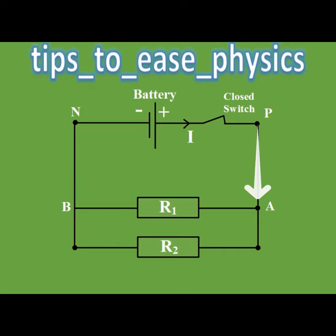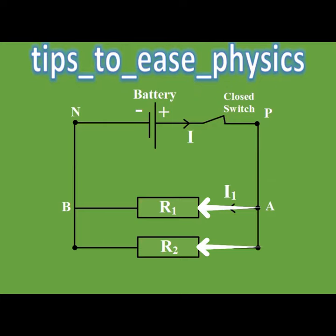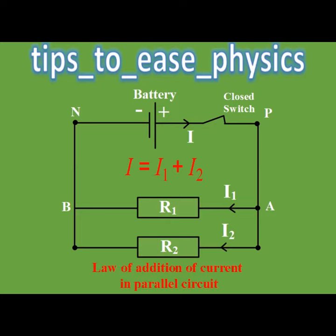When we reach junction A, the current will split out I1 across R1 and I2 across R2. We can conclude that the main current I equals I1 plus I2 — the law of addition of current in parallel circuits.